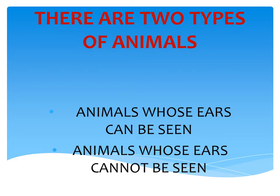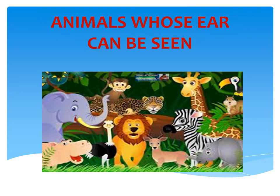In this chapter, we will divide the animals into two groups. The first group will have animals whose ears can be seen, and the second group will have animals whose ears cannot be seen. Now can you see this picture? In this picture, most of the animals have big ears which can be seen very nicely.